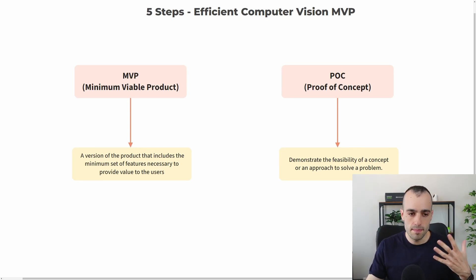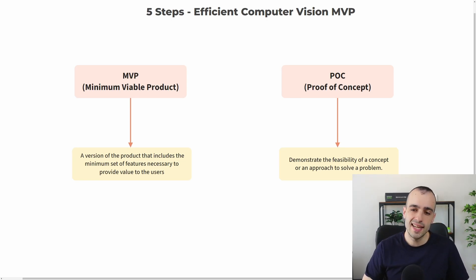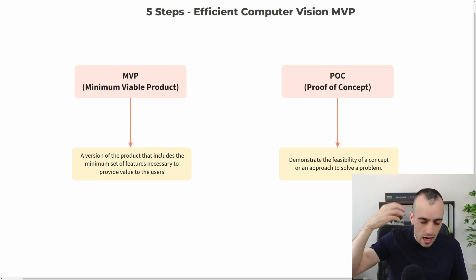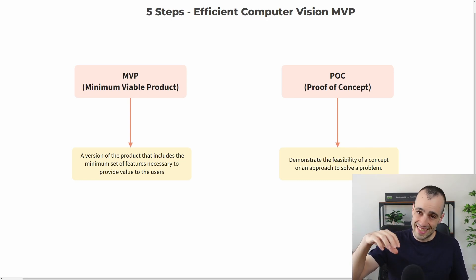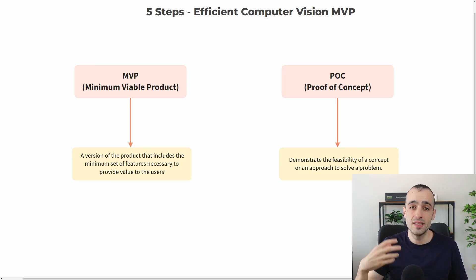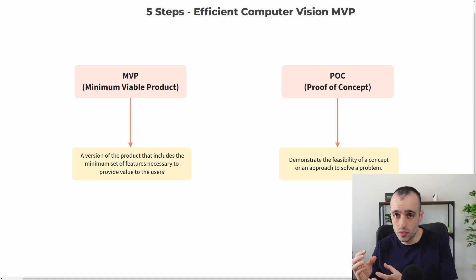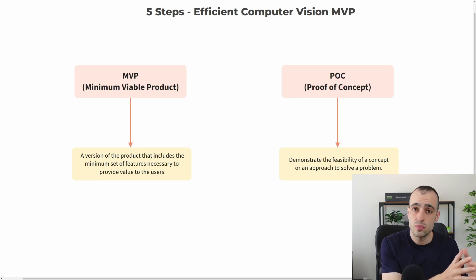The MVP is the minimum viable product — it's already a version of the product that offers some features and works with the final client to gather feedback. The proof of concept is a step before that; it's only to demonstrate the feasibility of a concept or approach to solve a problem, mostly to prove to the client that the solution is possible, and it's used mostly to get investments and funding to build the solution. For example, if the goal is to build software to identify defects on products on a conveyor belt, a POC could be simple code showing that a deep learning algorithm can identify defects in a video, while an MVP would need to already work on at least some of those defects and gather real user feedback.